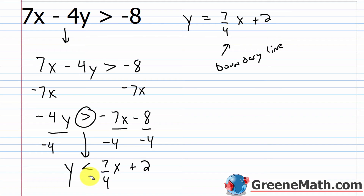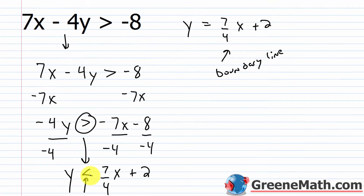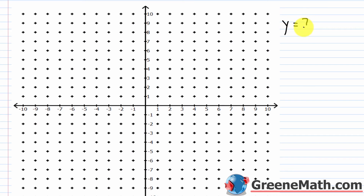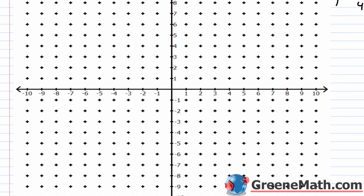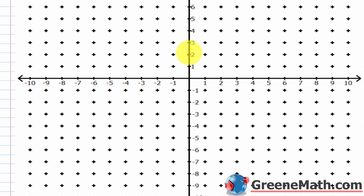The inequality is strictly less than, so I want to make sure I have a broken or dashed line. The boundary line equation is y equals 7/4 x plus 2. The y-intercept occurs at (0, 2).